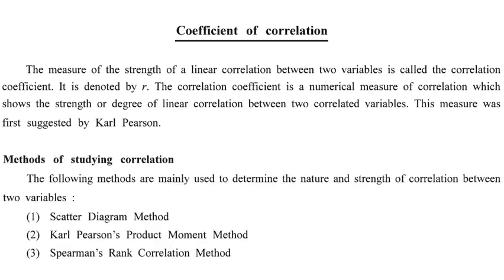Some methods of studying correlation are: first, the scatter diagram method; second, Carl Pearson's product moment method for calculating the coefficient of correlation; and third, Spearman's rank correlation method, given by Charles Spearman. In today's tutorial, we will study the first method — the scatter diagram method.